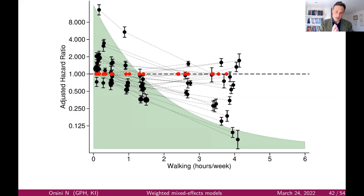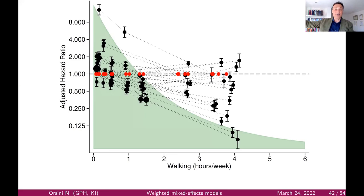If you have the baseline rate, the confidence interval would reflect how much information you have for a certain comparison, without the artificial increase in uncertainty due purely to math.